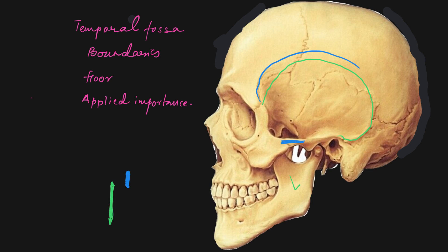On the lateral side there is the zygomatic arch, and on the medial side, deep to the infratemporal region, is the body of the sphenoid continuing with the greater wing of the sphenoid. This area forms the infratemporal fossa, and the area above forms the temporal fossa. These two fossae are connected by this gap. The superior and inferior temporal lines form the superior boundary, and the anterior boundary of the fossa is also visible here.